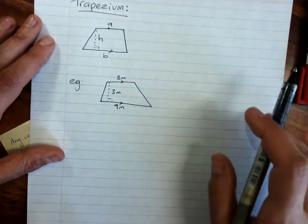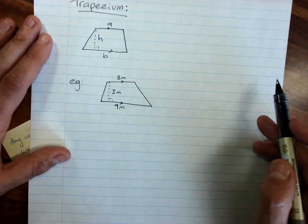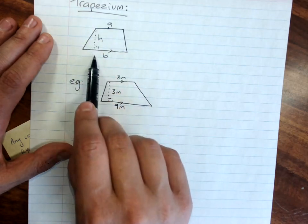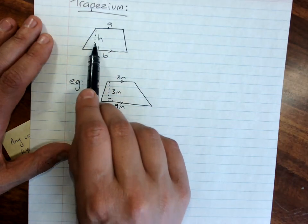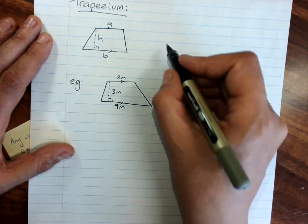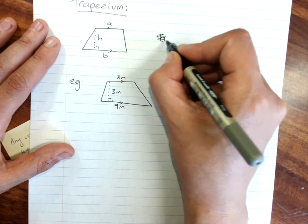The last one is the trapezium, and it's a little bit trickier because it's got a pair of parallel sides and the height is in between them, at right angles to both of them. The formula is...